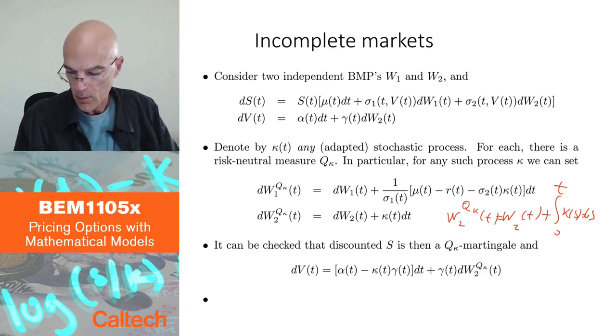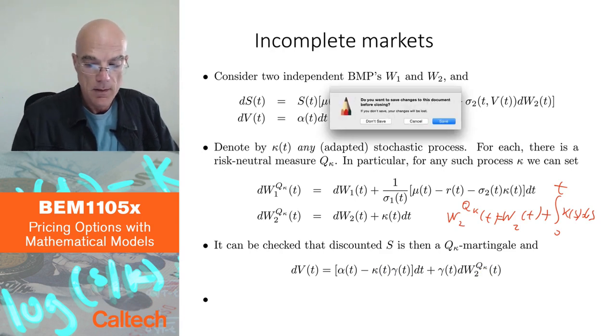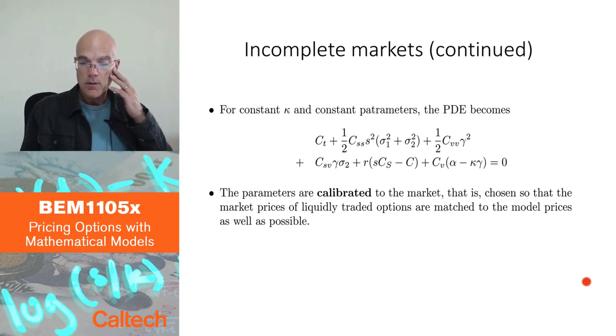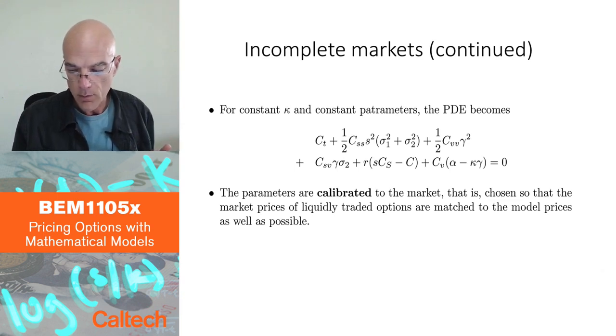And then you can write down a partial differential equation similarly as before. Well, you can write a partial differential equation if you have constant parameters or at least deterministic parameters or parameters which are deterministic functions of your stochastic factors here.